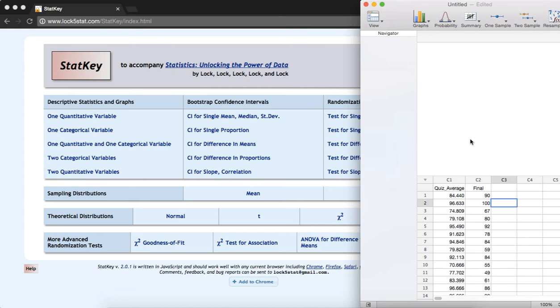In Minitab Express, we have data concerning the quiz scores and final exam scores from a random sample of 50 STAT 200 students. We're going to use these data to construct a 95% confidence interval for a correlation.